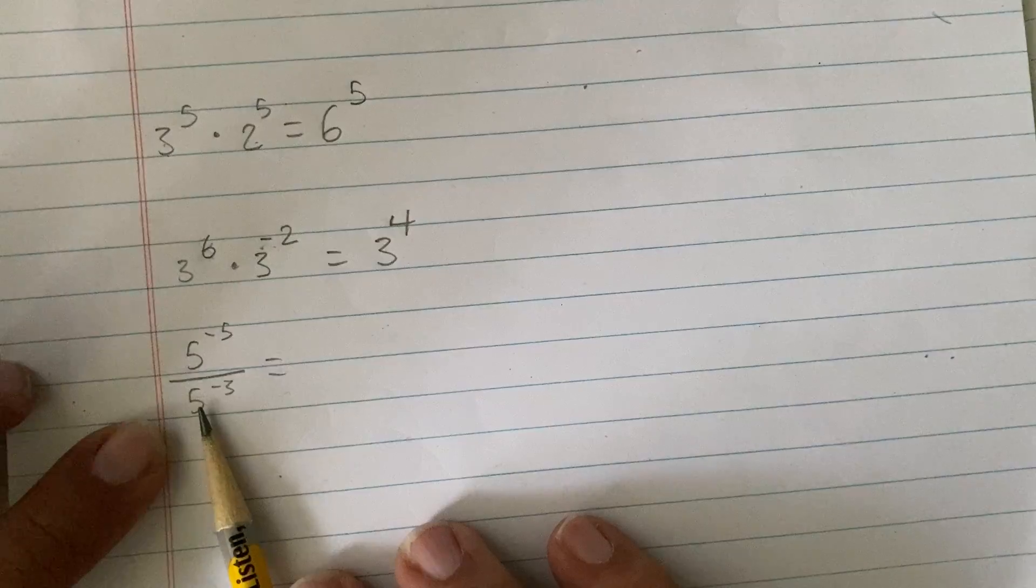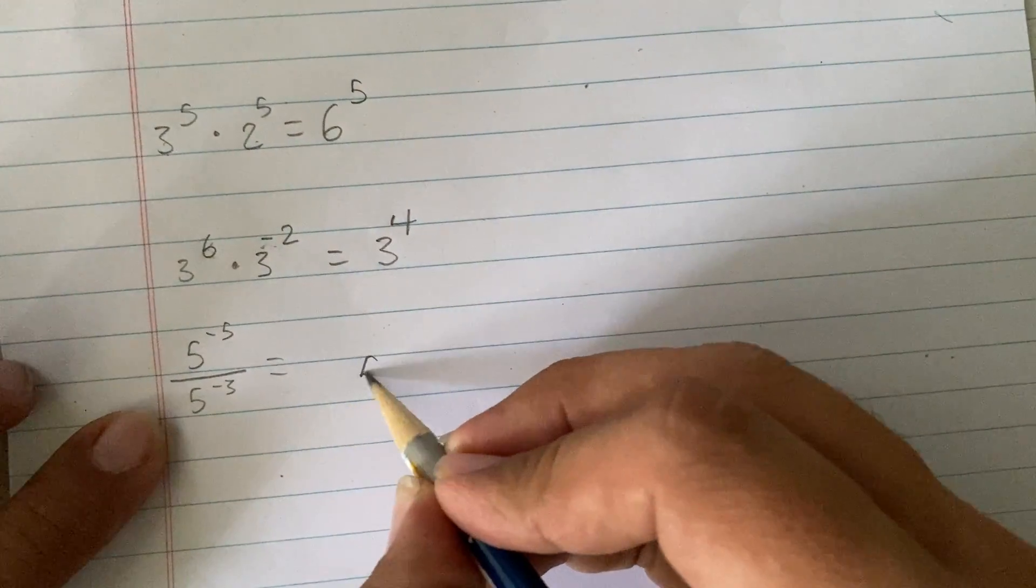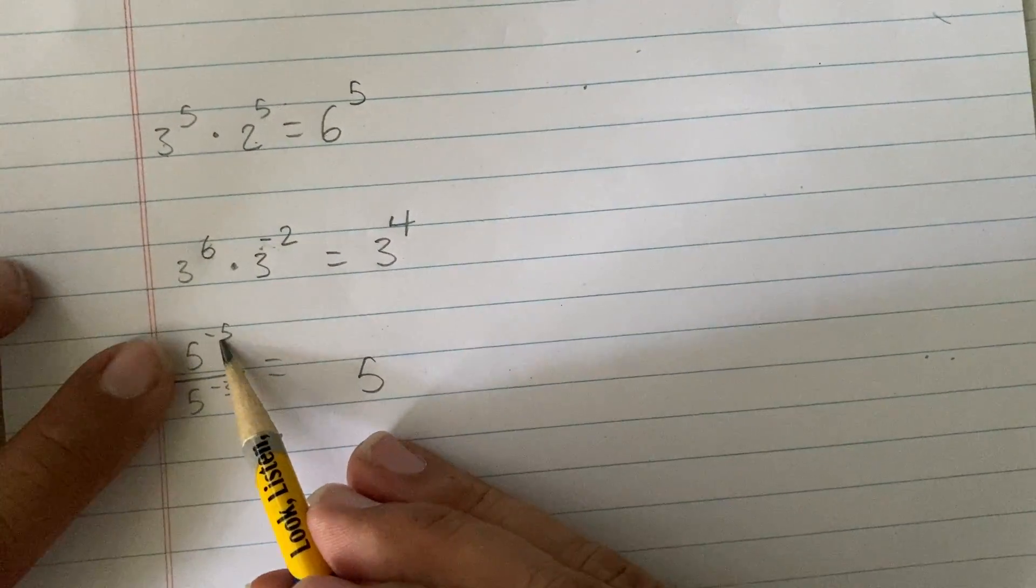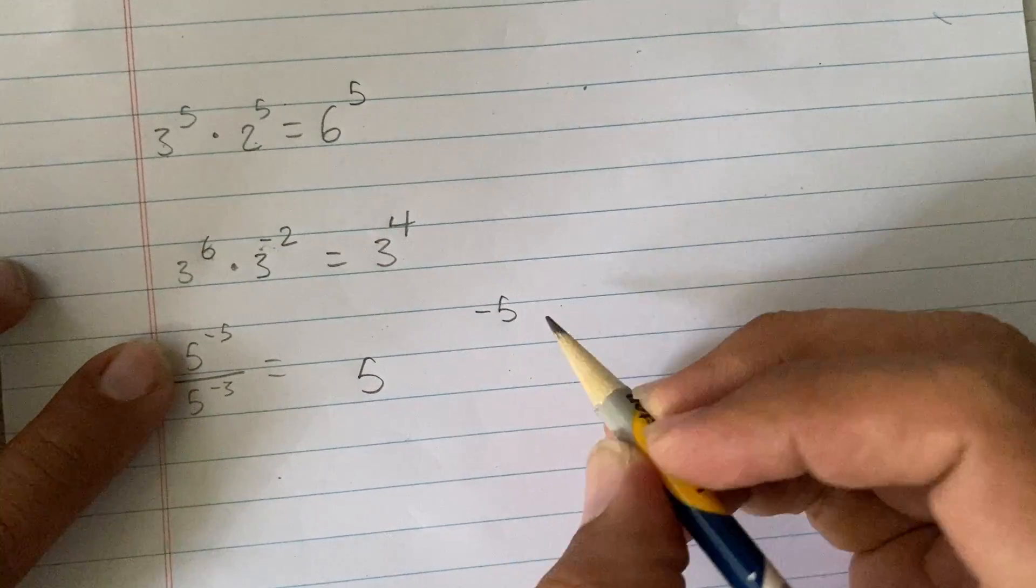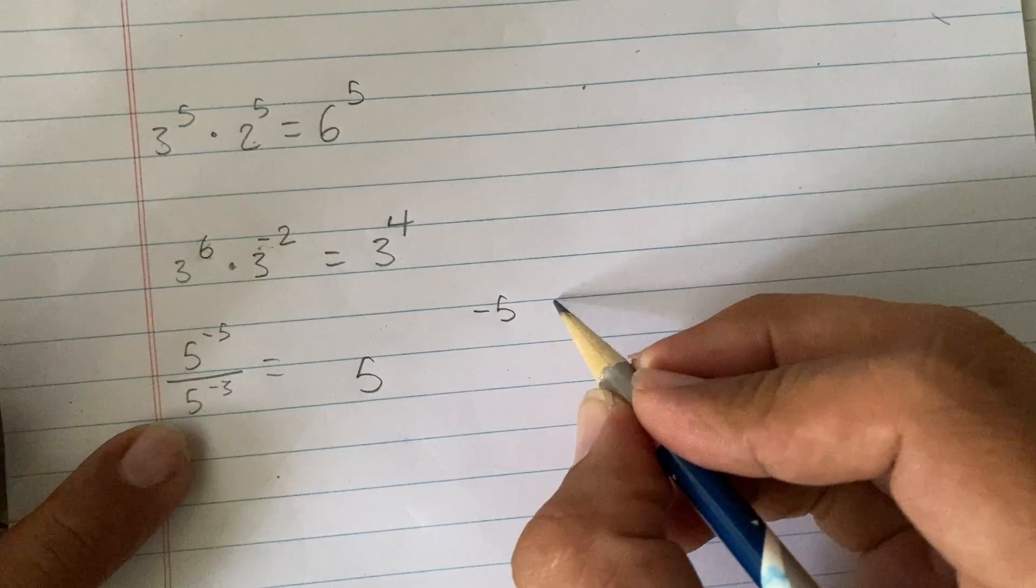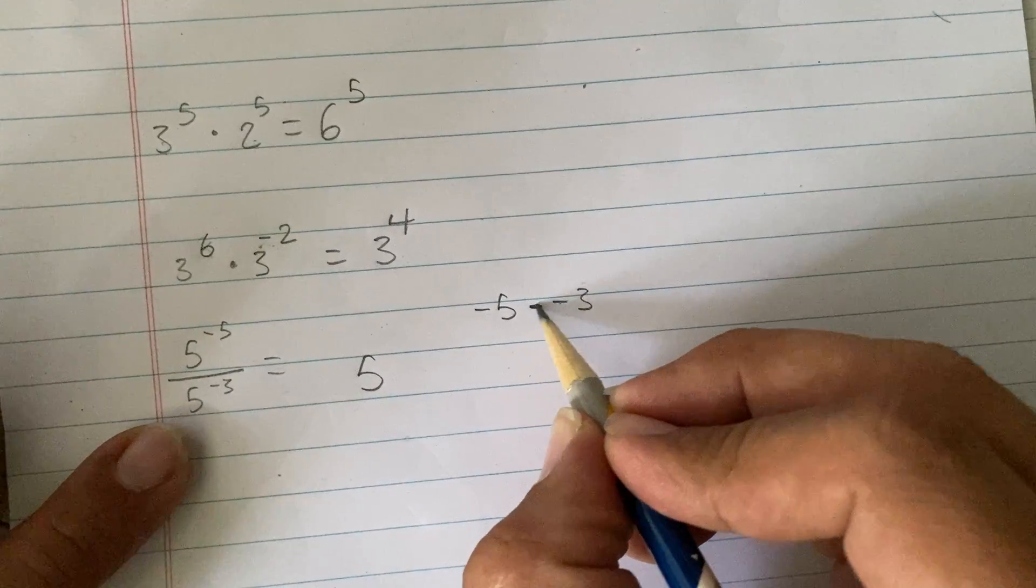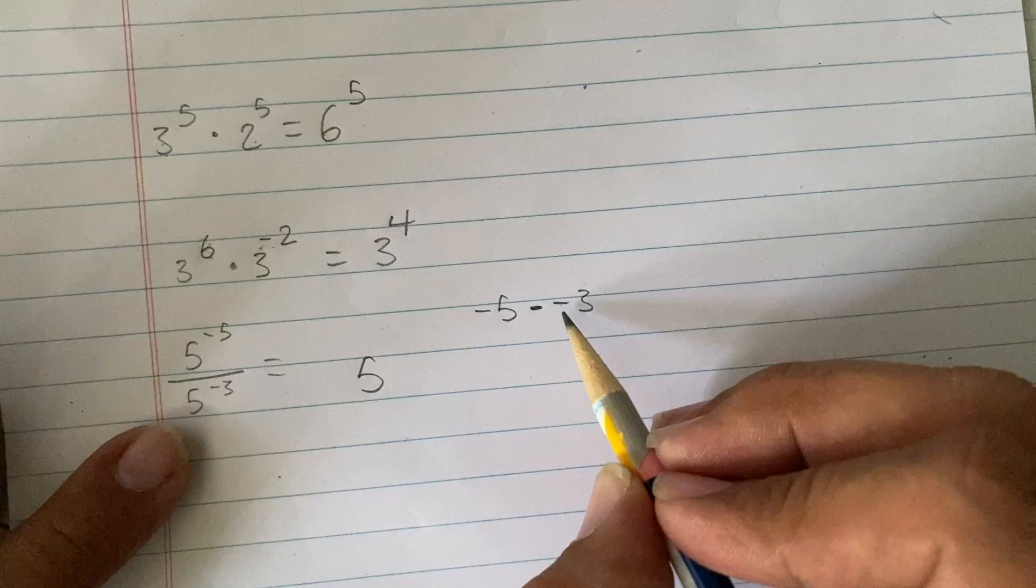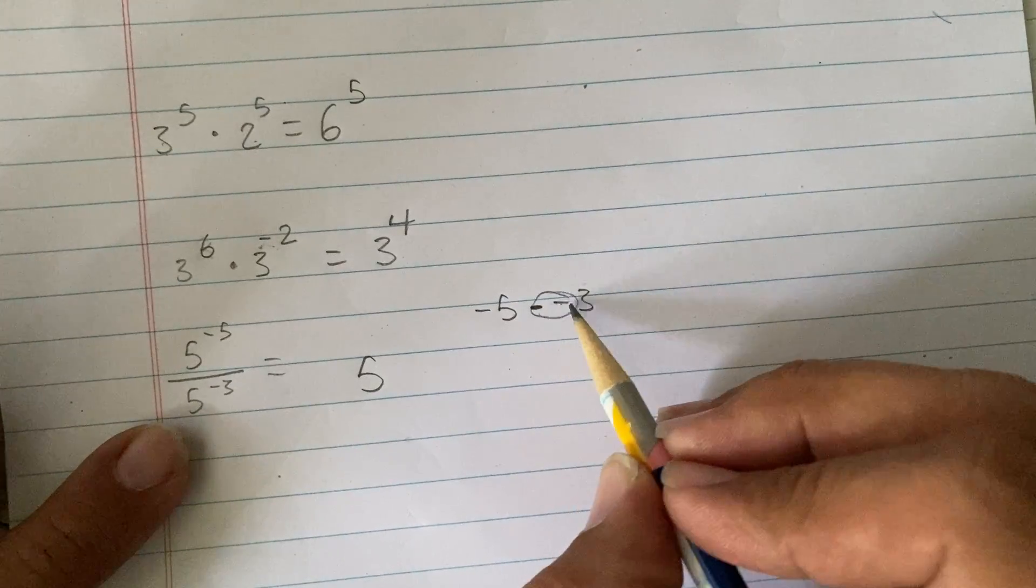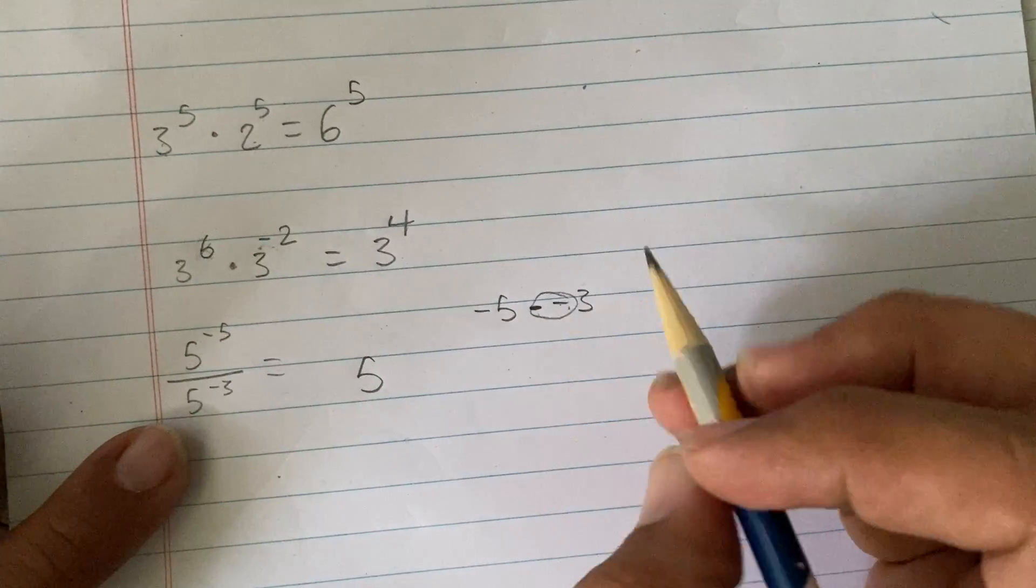Here, I know that the base is going to stay 5. But now, I know that negative 5 and negative 3 are actually going to subtract. Now, when one number has two signs, like this one does, two negatives actually create a positive situation here.